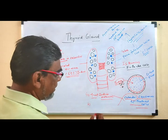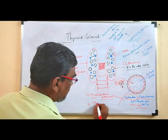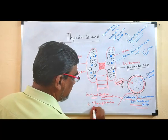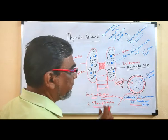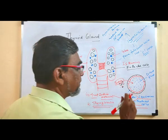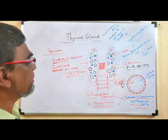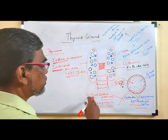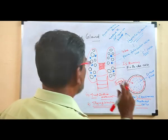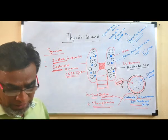The second function of cuboidal squamous epithelium cells is the synthesis of thyroglobulin. These are the two important functions of cuboidal squamous epithelium cells — most important information from the examination point of view. These two functions also involve a feedback mechanism.